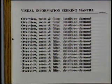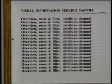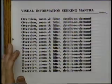Overview first. A visual overview of the entire database is the place to go. See the entire Library of Congress at once. See the entire directories on your hard drive at once. See all the films in the database at once. That is a key. Then, zoom in on the objects of interest, filter out the ones you don't want, and then go for details on demand.